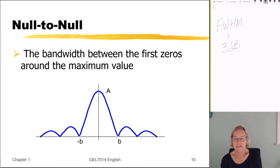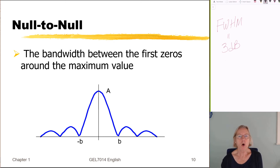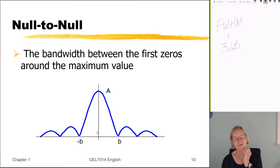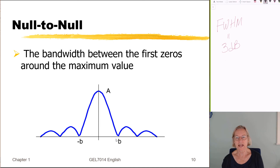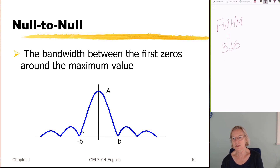Another definition is the null-to-null bandwidth, which is quite simple: take the main lobe of the energy spectral density and use its width as the bandwidth. This is a fairly simple expression, especially for analytical forms like a square pulse or a triangular pulse, where the main lobe is easily defined.